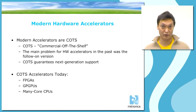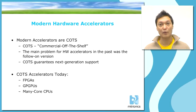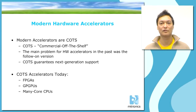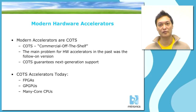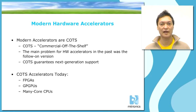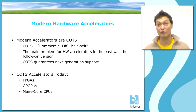History has seen a lot of computer accelerators. However, modern hardware accelerators have one important difference from the traditional accelerators of the past: modern hardware accelerators are COTS, or commercial off-the-shelf. This means that these devices have a large mass market that uses them for purposes other than hardware acceleration.